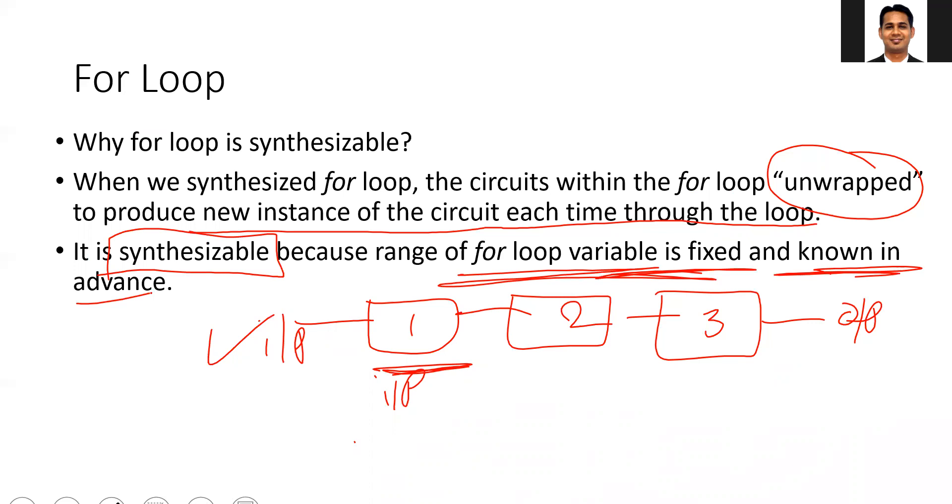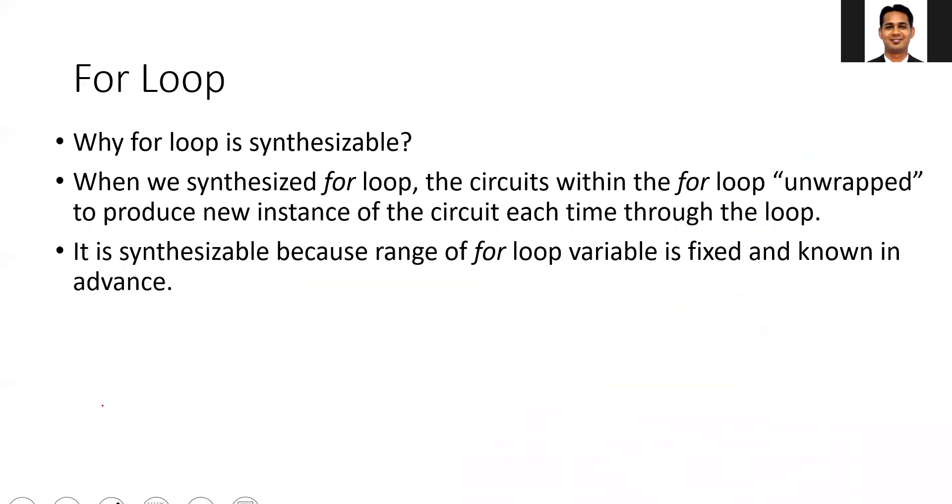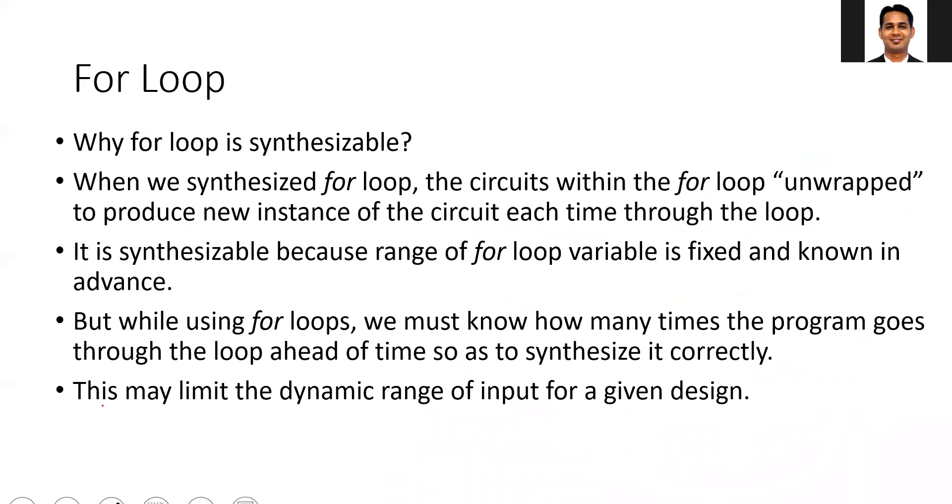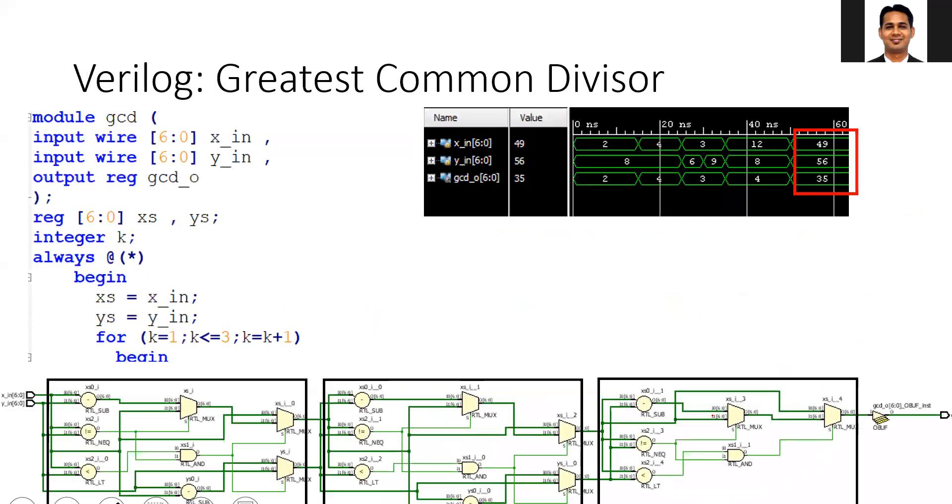Everything is working fine, but the problem is you must know in advance how many times the program goes through the loops. This may limit the dynamic range of the input. For example, if I give values 49 and 56, the output is 35, which is wrong.